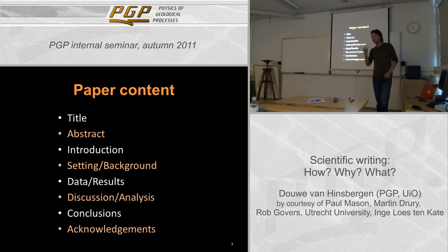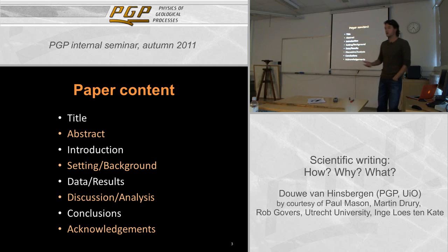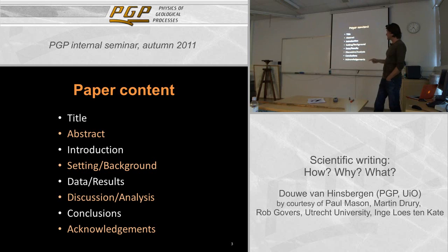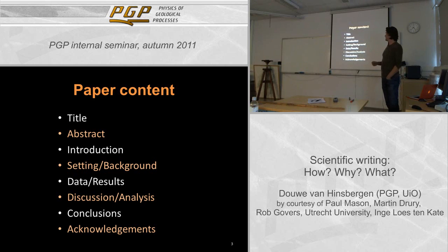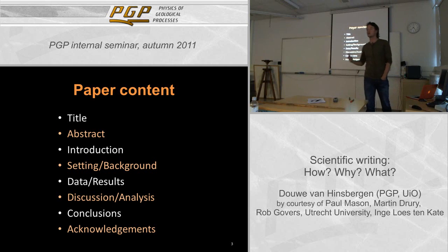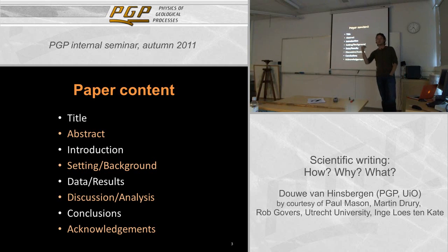If we go specifically into a paper, a paper — or thesis — is built up with a title, an abstract, an introduction, a setting or background or previous work section, the data, discussion and analysis, conclusions, acknowledgements, and references. I will simply go through this step by step, with every paper set up in this order.